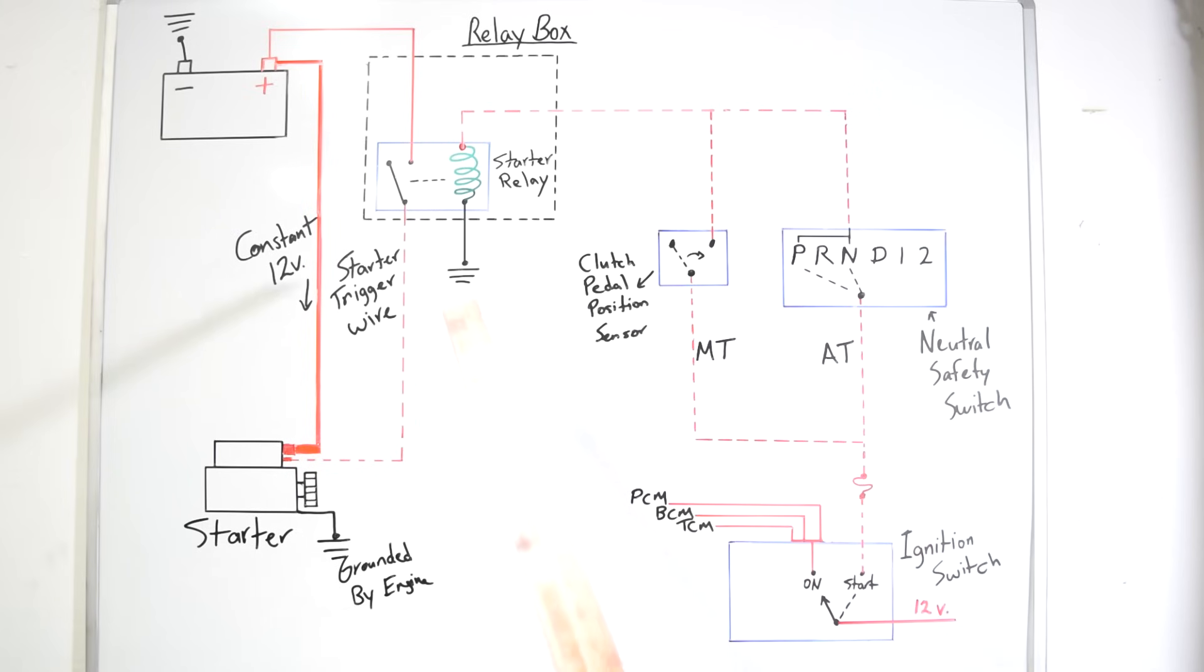And again just to clarify, our test light was here and then we turned the key to the start position. Voltage was able to get through all this fuse, these wires, these sensors to here and light up our test light, so we verified that everything on this circuit is fine.